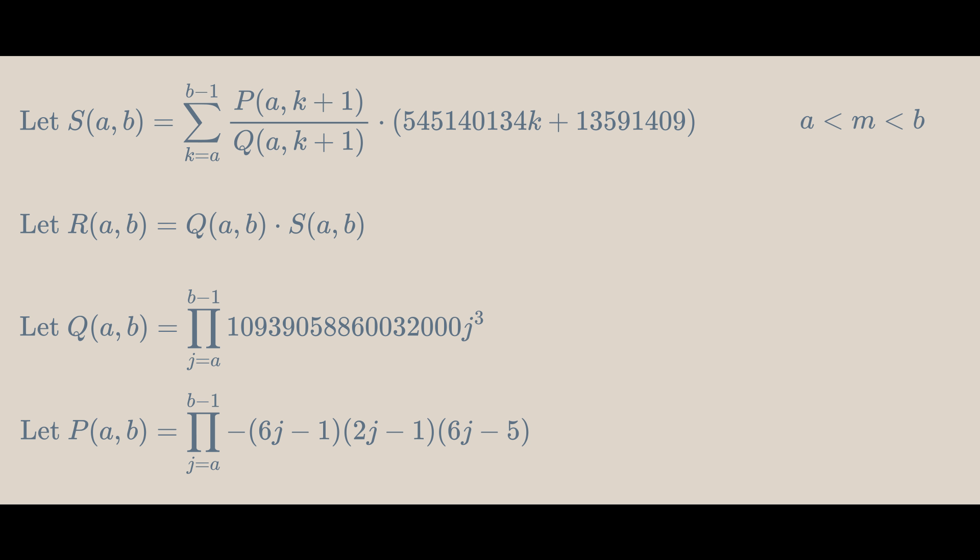Now, let's consider some value m between a and b. This is going to be used to recursively compute the functions. I think it's clear that P(a,b) equals P(a,m) times P(m,b) and Q(a,b) equals Q(a,m) times Q(m,b). Because they're defined as a product from a to b minus 1, which is the same as a product from a to m minus 1 times the products of m to b minus 1. This is why the product is only up to b minus 1.